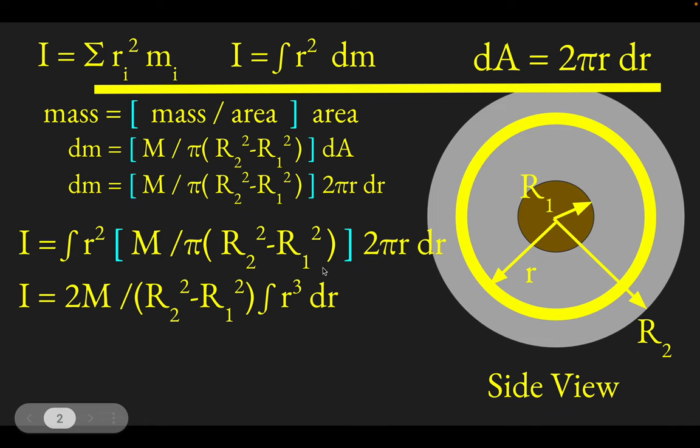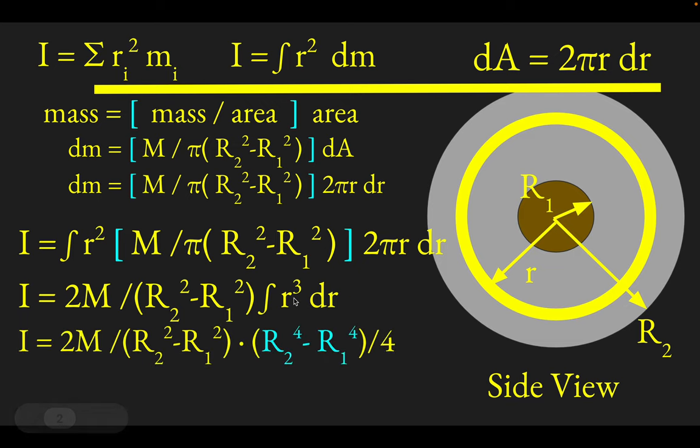Now, the limits of this integral, if we want to find the moment of inertia of this tube or toilet paper roll, is we need to integrate from the inner radius R1. So that'd be your lower limit, R1, and your upper limit will be R2. When you integrate this thing, R cubed integrates to R to the 4th over 4, but then you need to evaluate it at R1 and R2. So you'll get R2 to the 4th minus R1 to the 4th over 4. That's what that integral would evaluate to.